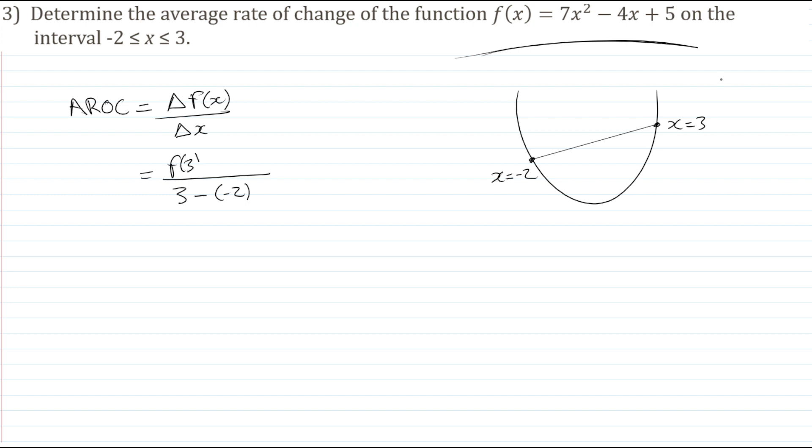So we can actually just write f(3), it's the y value that goes with 3, subtract the y value that goes with -2. And we can calculate these values. So for f(3), I'm just going to sub 3 into that equation, and that will give me that y value. So we get 7 times 3² minus 4 times 3 plus 5, which is 56. That's what I get if I sub 3 into our function.